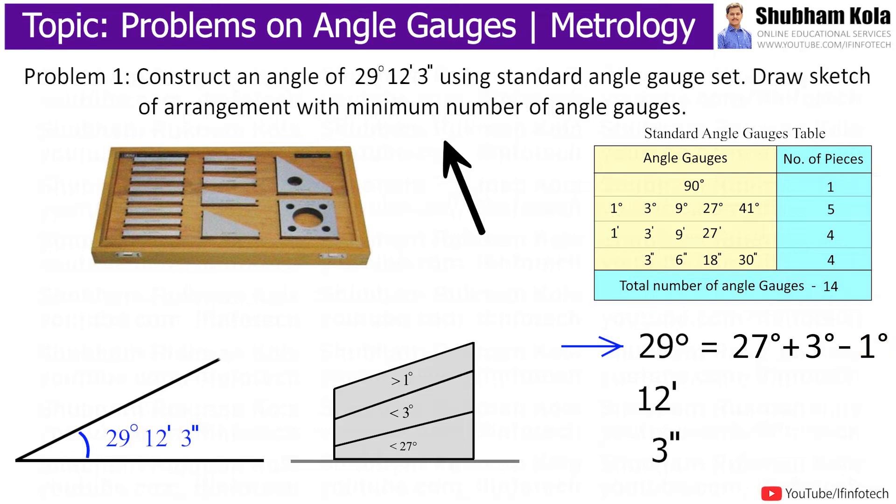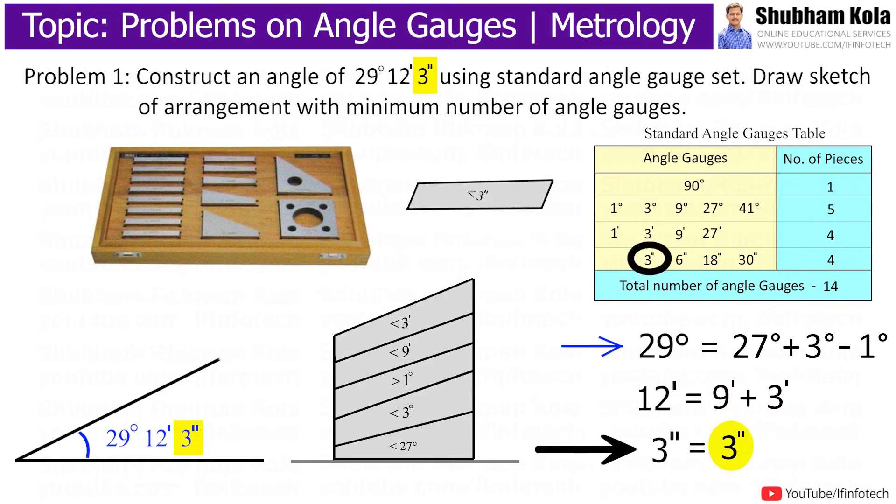Now in the problem, there are 12 minutes, so to build this angle, I will add 9 minutes and 3 minutes angle gauges from the standard angle gauge set. The 3 seconds angle gauge is already available in the standard angle gauge set, so I will use that.